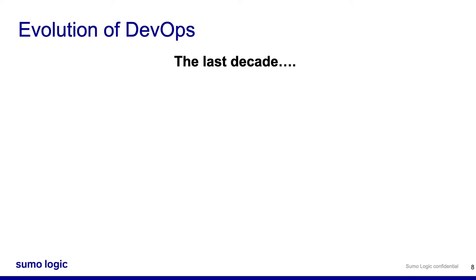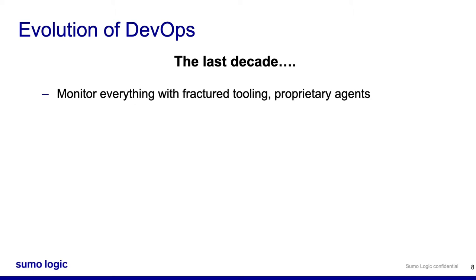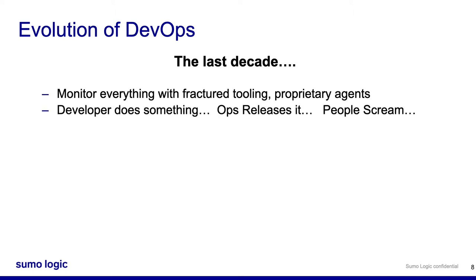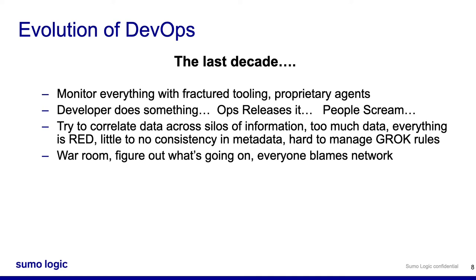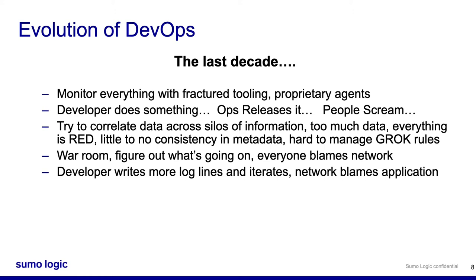Over the last decade we've moved into DevOps and Agile — monitoring everything with fractured tooling and proprietary agents. A developer would do something, ops would release it, and still people would scream. You'd try to correlate data across different information silos, proprietary tools, fractured data silos — too much data, everything is red, little to no consistency in metadata. War rooms assembled again, everybody trying to figure out what's going on, and increasingly it became a development problem, a software problem. Developers would write more log lines; sometimes it took weeks to get those log lines into production. Eventually the problem would get fixed — and it generally wasn't the network.